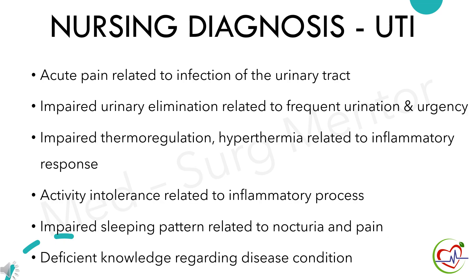Nursing diagnoses for patients with urinary tract infection are: acute pain related to infection of the urinary tract; impaired urinary elimination related to frequent urination and urgency; impaired thermoregulation related to inflammatory response; activity intolerance related to the inflammatory process; impaired sleeping pattern related to nocturia and pain; and deficient knowledge regarding the disease condition.